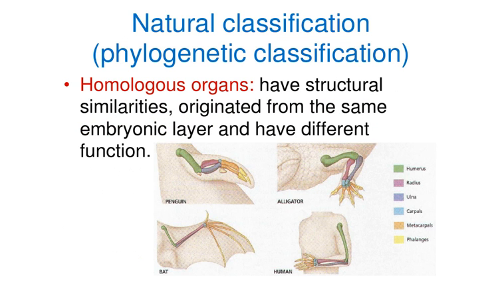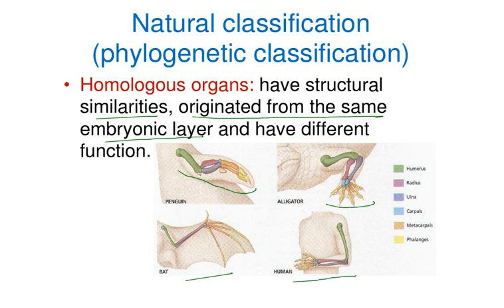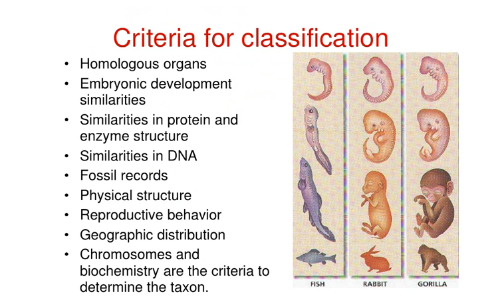Natural classification is the classification we use today. It examines homologous organs — for example, a penguin's wing, an alligator's legs, a bat's wing, and a human arm are all homologous organs because they have structural similarities and originate from the same embryonic layer, even though they have different functions. Additional criteria for natural classification include embryonic development similarities, which require examining the embryos of organisms to understand their relationships.